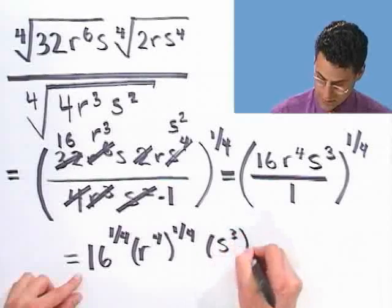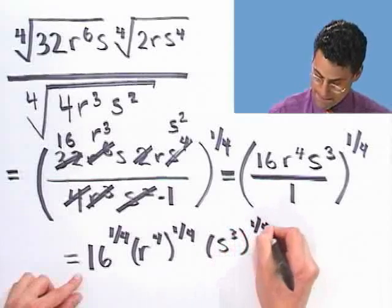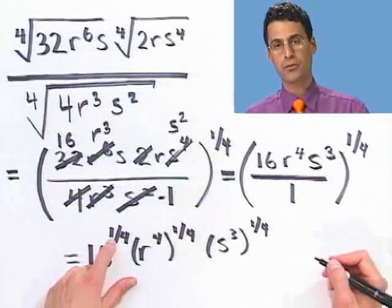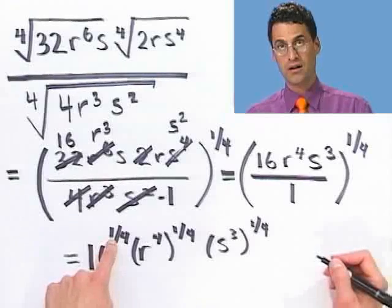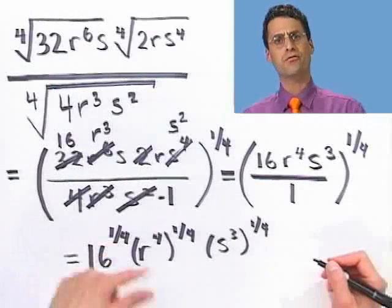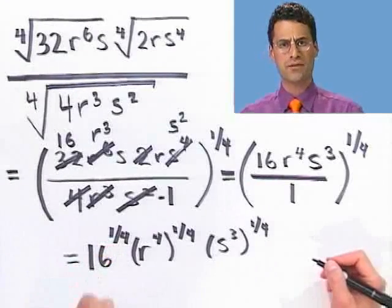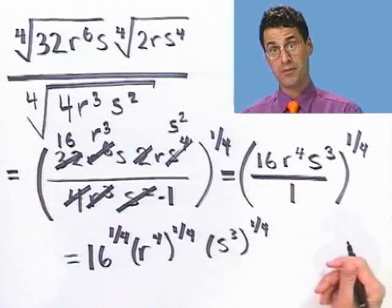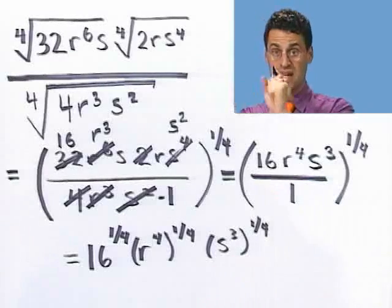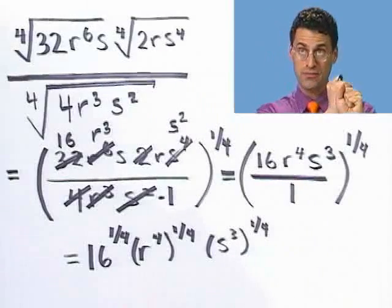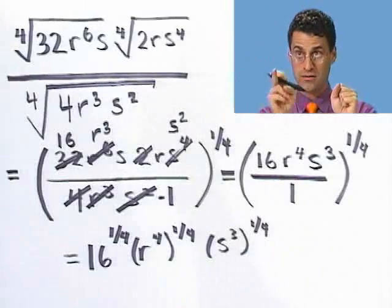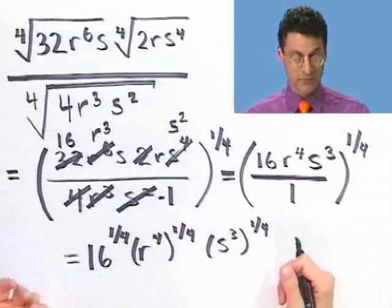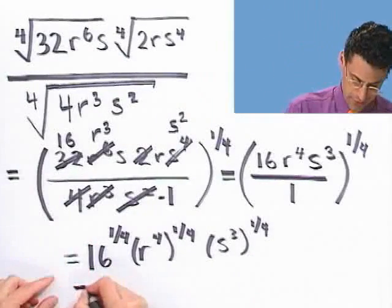16 to the one-fourth power means the fourth root of 16 — I need a number that times itself times itself times itself equals 16. Two works, so this equals 2.